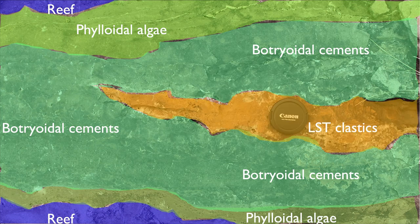Finally, during the low stand, we have clastics that are being deposited in whatever is left of that porosity. So we lose most of the porosity in the reef thanks to that water circulation.